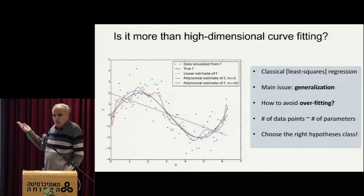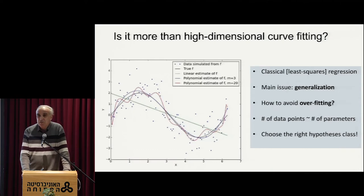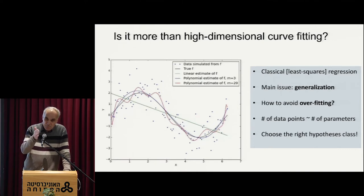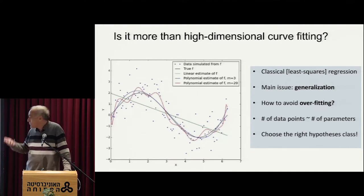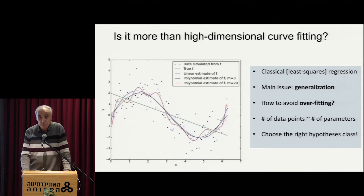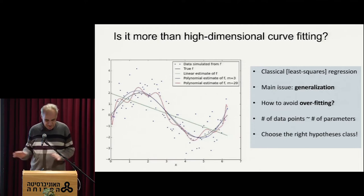Essentially all of learning theory, without reducing it too much, is all sorts of tricks around these two things: give me generalization bounds — bound the error outside of your training data given the error inside your training data — and how to control the complexity or avoid overfitting of your classes in some clever way. There are many books about it, but that's it.